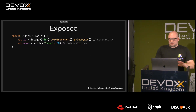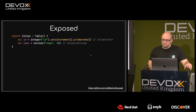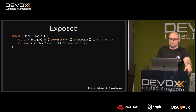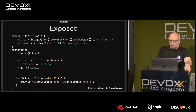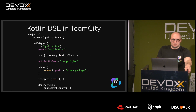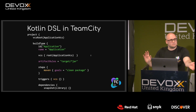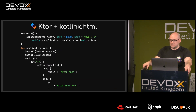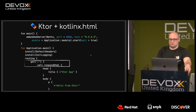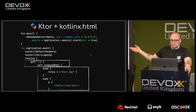Let me show some examples first. Exposed is a small library for accessing databases that provides DSL-ish APIs — there's a transaction, you create a table, insert data, query the table, iterate values, and print them out. The Kotlin DSL for TeamCity configurations looks very much like JSON: it has a project, a configuration, an ID, name, build steps, and so on. Ktor has a DSL for routing and a DSL for generating HTML documents.